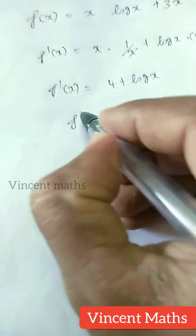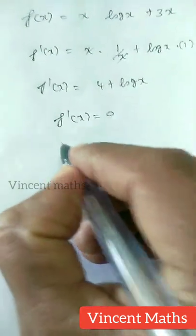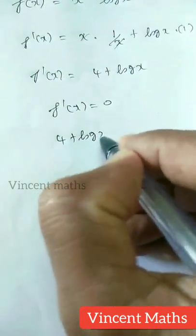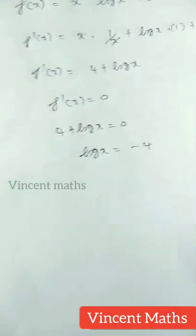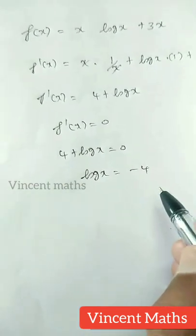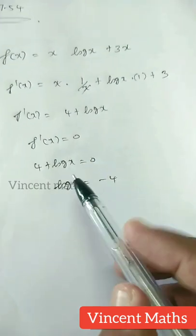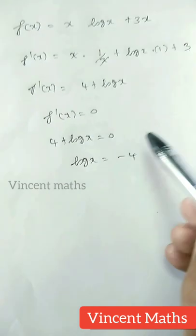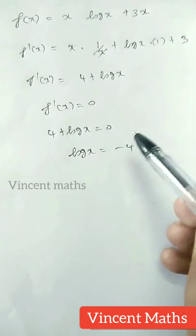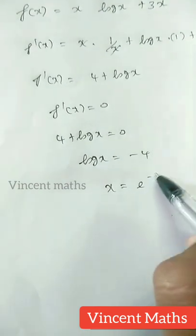Next, we substitute f dash of x equals 0. Then we have 4 plus log x equals 0, which gives log x equals minus 4. Now, if we apply the exponential rule, we cancel the log and take e to the power of both sides. So x equals e power minus 4.